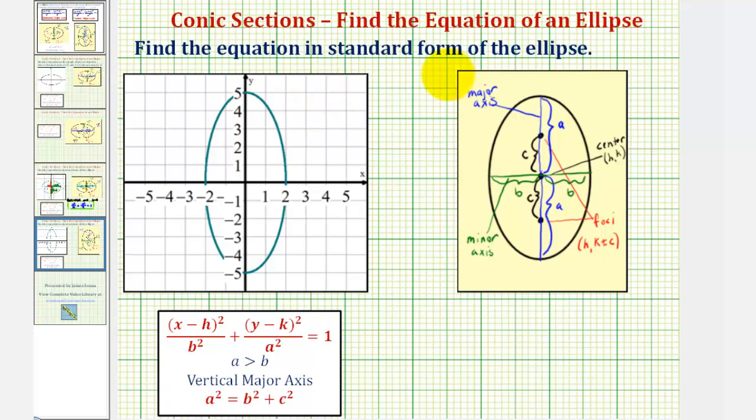We want to find the equation in standard form of the ellipse graphed here on the left. The first thing to notice is that we have a vertical major axis, which is this axis here.